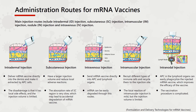The administration route for mRNA vaccines is very important, as it determines the metabolism of the mRNA vaccine in vivo and the translation efficiency of the target antigen protein. For example, if untreated naked mRNA is injected directly intravenously, it will be rapidly degraded by nucleases in the blood. In addition, the expression position of antigen protein also determines the choice of drug administration route.